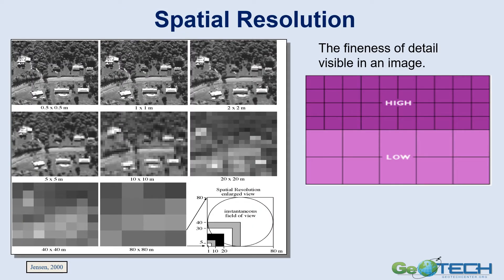For spatial resolution, it's the finest detail visible in an image. On the left, we can see that a half-meter by half-meter pixel gives us a pretty detailed picture of what we can see. As we go bigger — 1, 2, 5, 10, 20, 40, and up to 80 meters — we can see that what we can identify as objects on the ground becomes harder and harder to see, going from high resolution to low spatial resolution. On the lower right, there's a graphic that compares the pixel area from a half-meter all the way up to an 80-meter pixel.